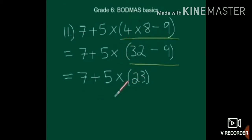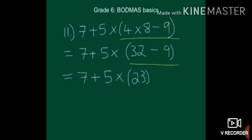Now we have plus and multiplication. Which operation do we use first by the BODMAS rule? First is multiplication, next is addition. So first multiply 5 into 23, then add to 7. How much is 5 into 23? That is 115. Then 7 plus 115. So the answer is 122.